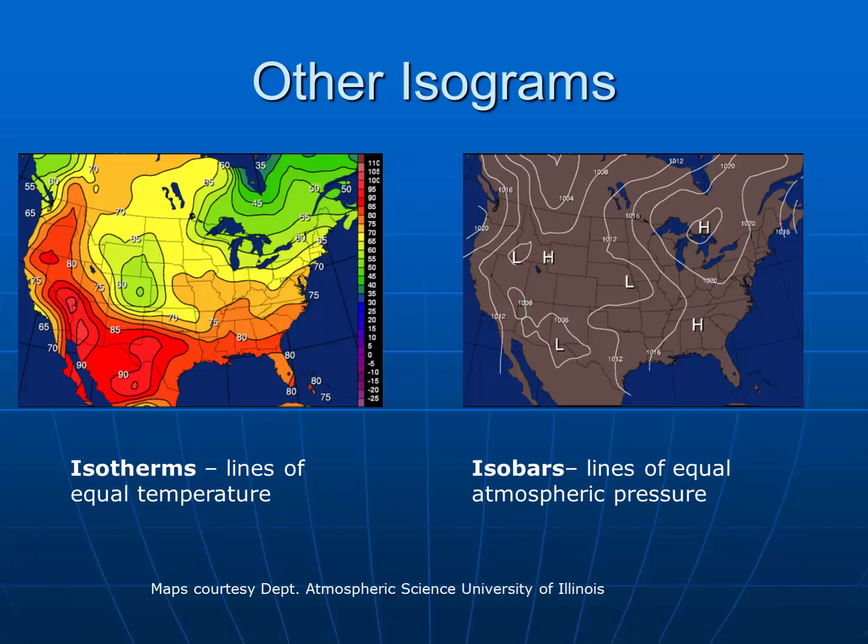Lines of equal value are referred to as isograms. In earth science, there are many other types of maps that use isograms. On the left, you can see a weather map that shows forecast temperatures — isotherms are lines showing equal temperature. Another weather map shows lines of equal atmospheric pressure, or isobars. All of these isolines are read in the same way that contour lines on topographic maps are read: the greater the change, the closer the lines are together; the further the lines are apart from each other, the less change. Learning how to read topographic maps and weather maps is a useful skill in earth science.